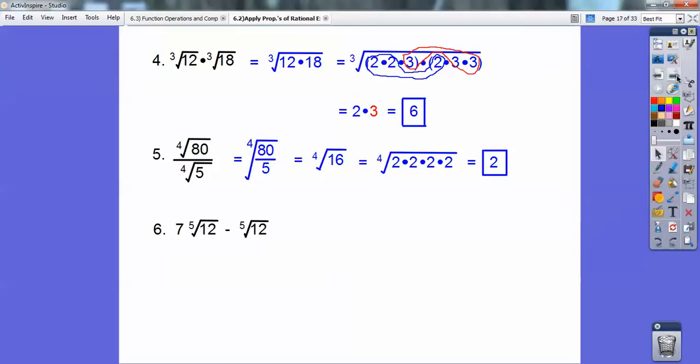Okay, so 7, this is 7 when there's nothing there. It's 7 times the 5th root of 12, minus an imaginary 1 times the 5th root of 12. Since these guys are the same, I can just subtract 7 minus 1. It's going to get me 6 of those 5th roots of 12.